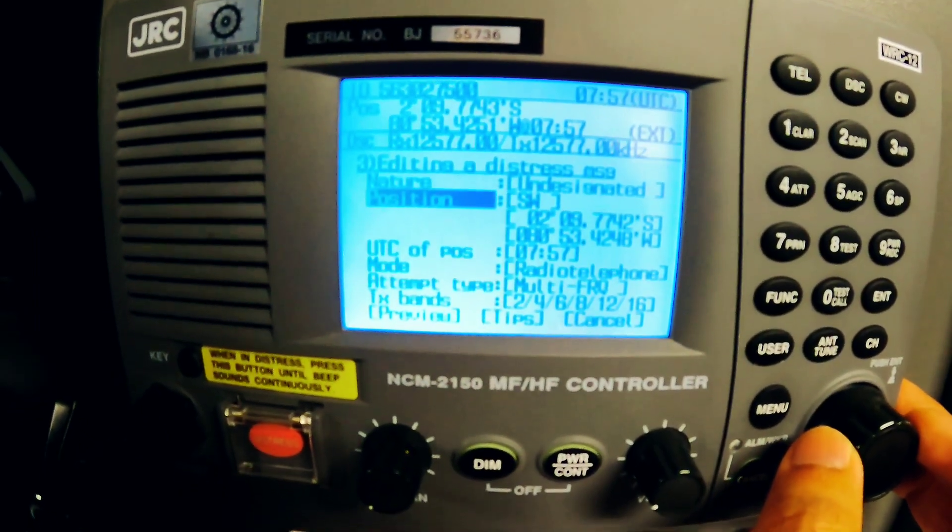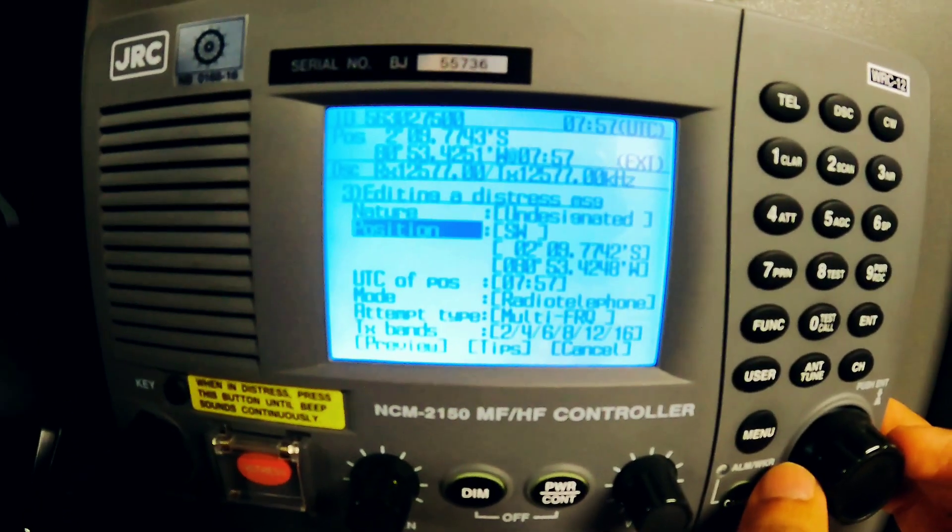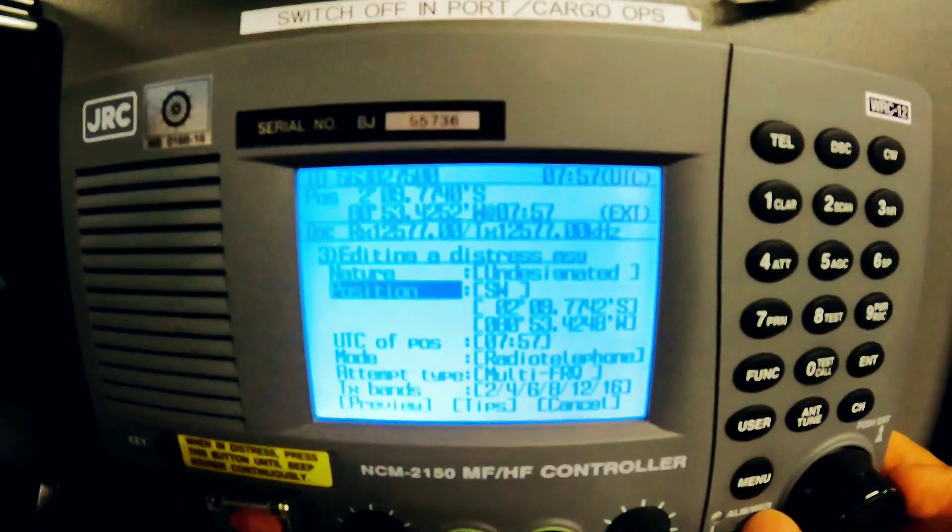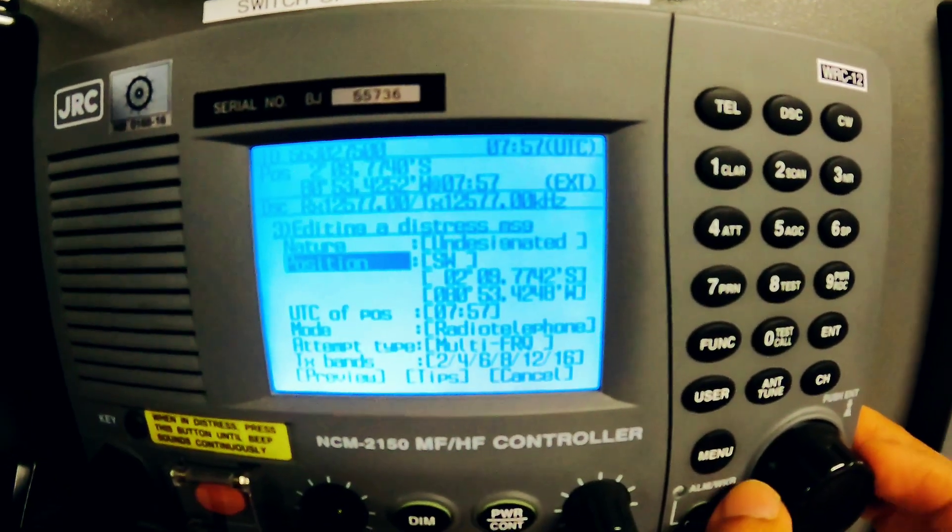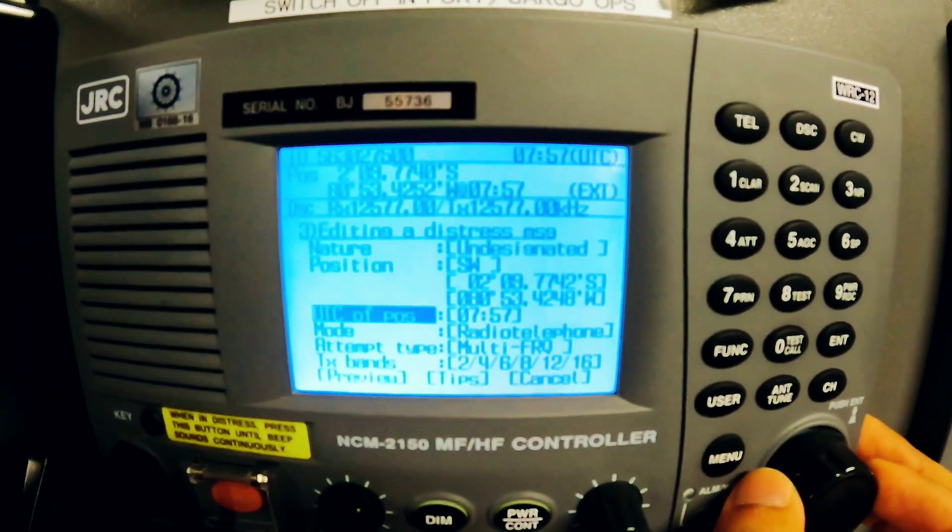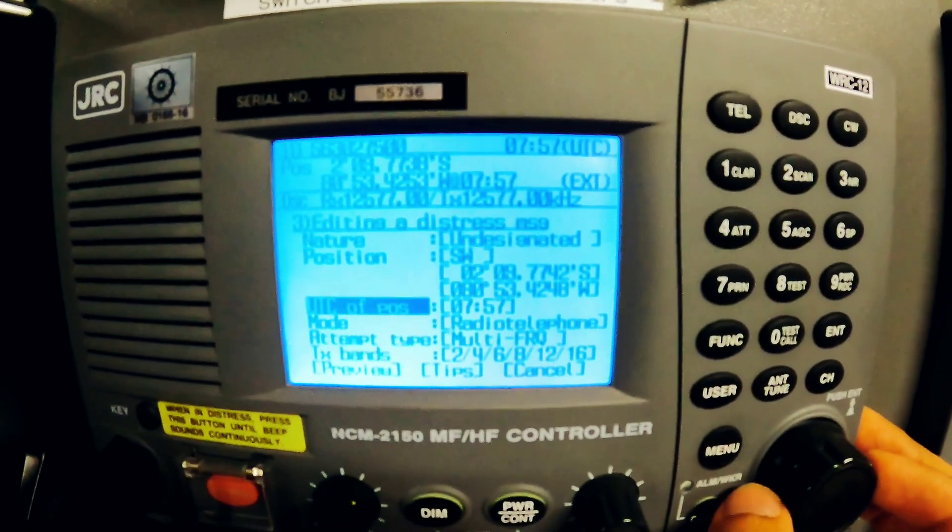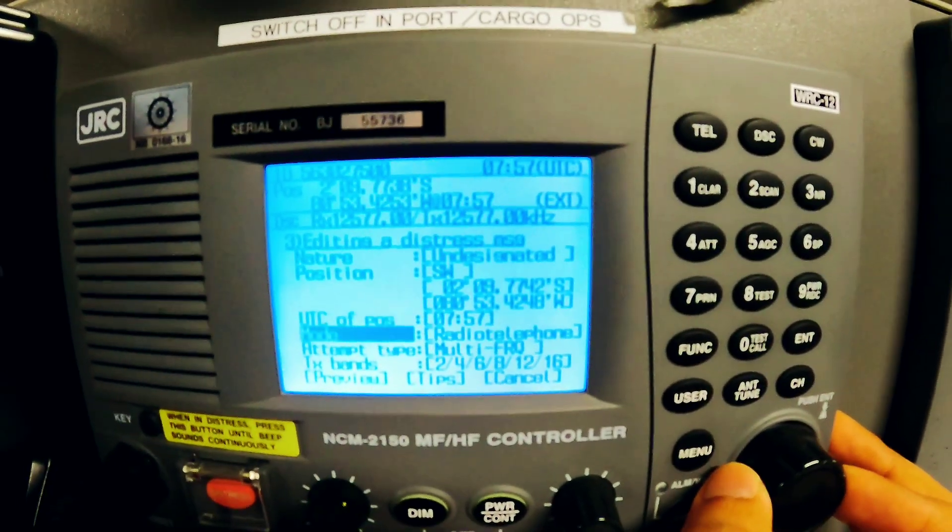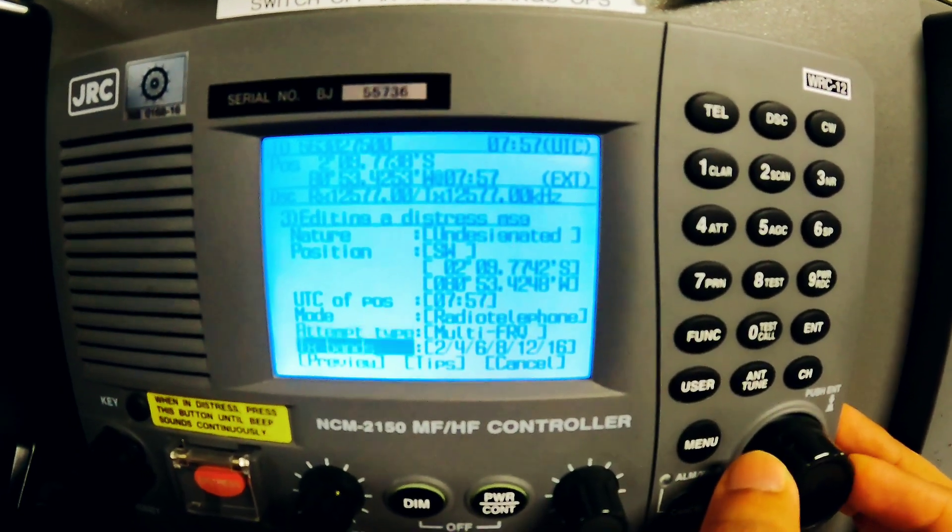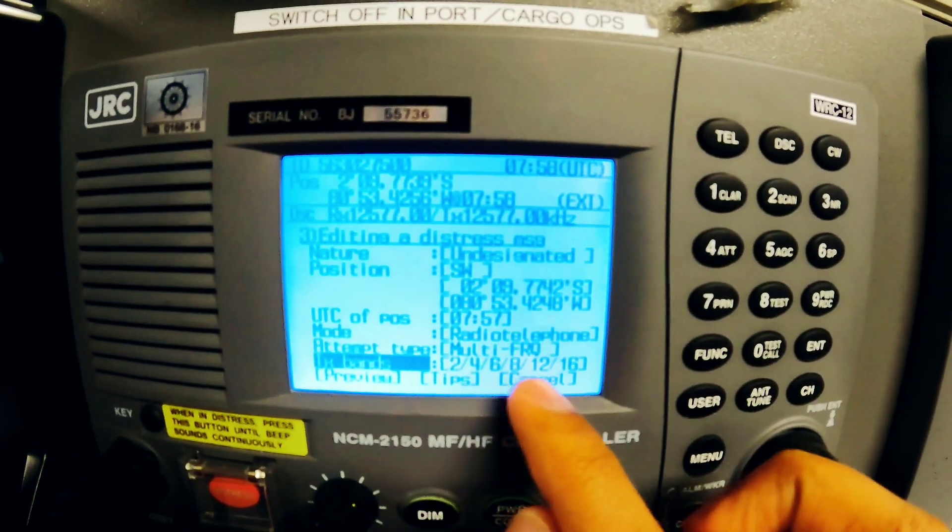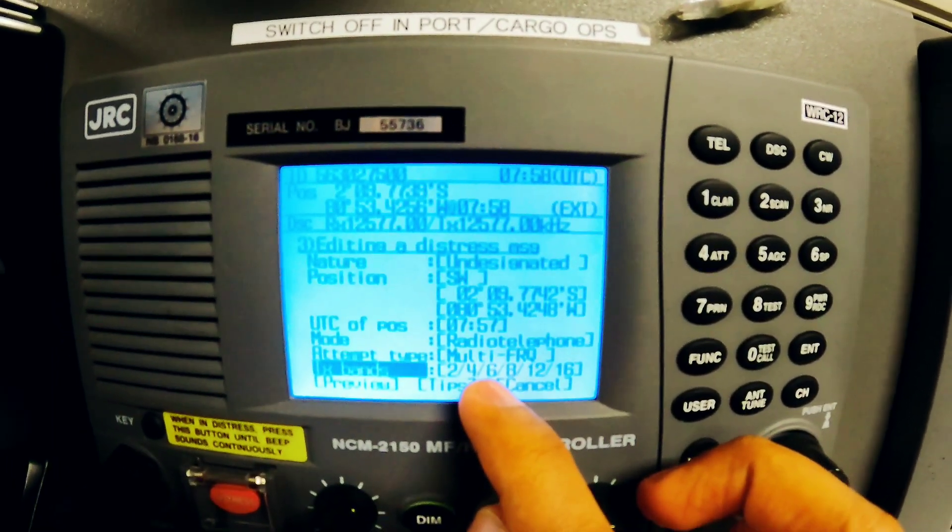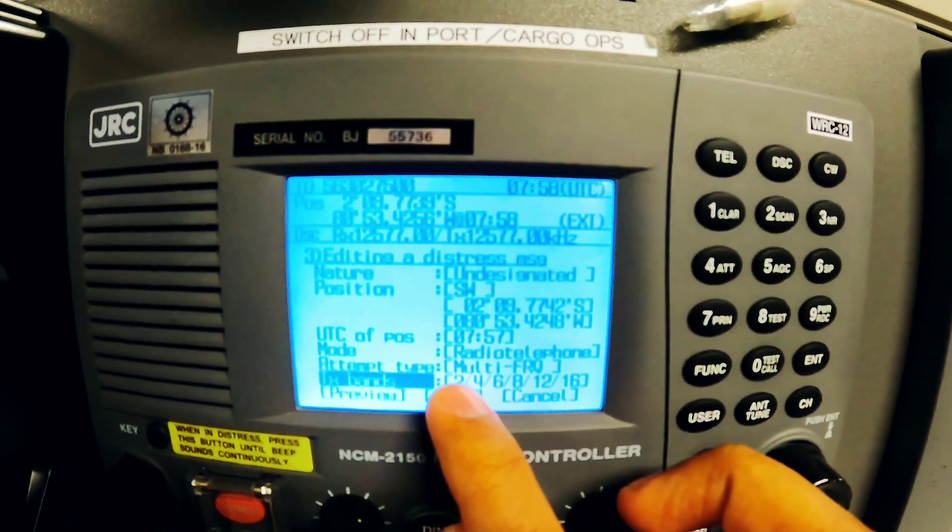Next is the position. It's normally updated by GPS feed, but if it's not, there's an option to update manually. Save the UTC of the position, whatever time you have transmitted that time. Mode is radio telephone and attempt type multi-frequency transmitting bands: 2, 4, 6, 8, 12, 16. It will be continuously sending the distress message on all these types of frequencies. 2 is for MF and then the rest is for HF.